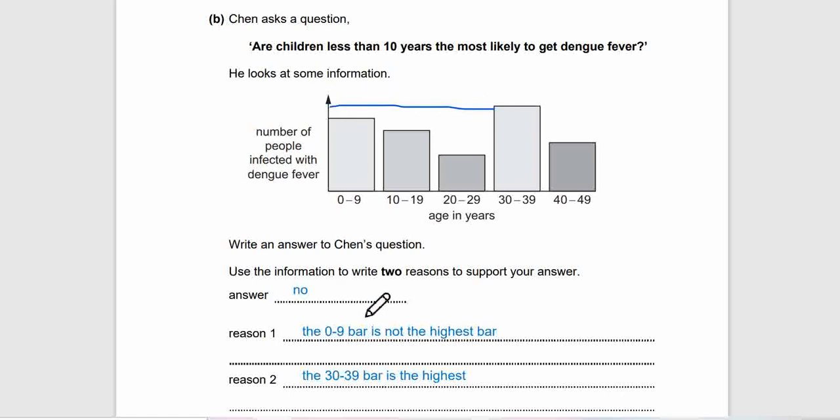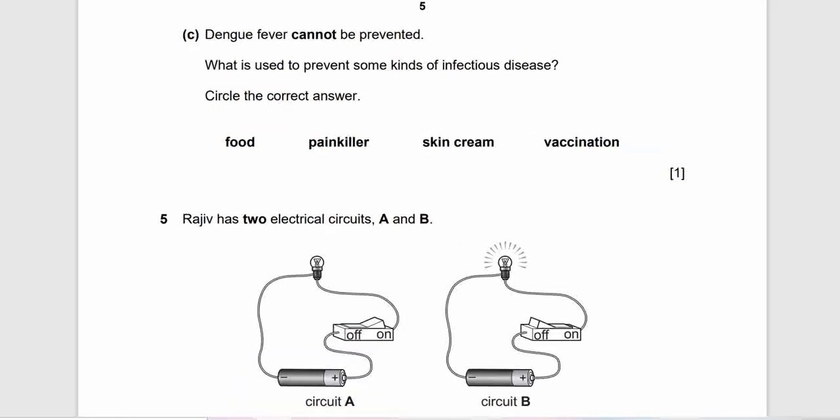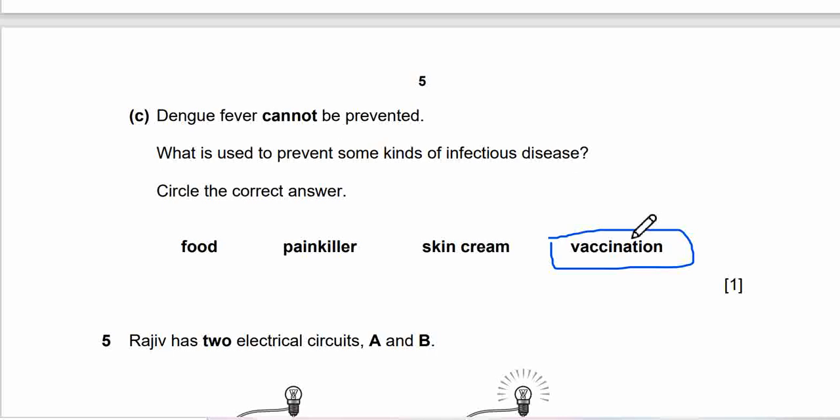Question 4c: Dengue fever cannot be prevented. What is used to prevent some kind of infectious disease like COVID-19? So what's the correct answer? Food, painkiller, skin cream, vaccination? When I mentioned COVID-19, we must know the answer right - infectious disease. The answer must be vaccination. Most of us get the vaccination for COVID.